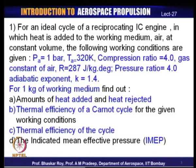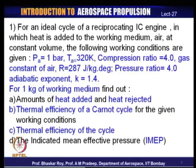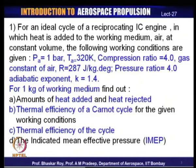The first problem is an ideal cycle of a reciprocating IC engine in which heat is added to the working medium — air — at constant volume. This is basically an Otto cycle. The following working conditions are prescribed: pressure at inlet is 1 bar, temperature is 320 K, the compression ratio is 4, the gas constant is 287 J/kg·K, and the pressure ratio through the combustion chamber is 4. The adiabatic exponent of air as the working medium is 1.4.